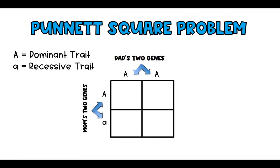In this example, mom is heterozygous — she has a dominant capital A and a lowercase recessive a, so that is her genotype with two genes. Dad is homozygous dominant — he has two capital A's, meaning two dominant genes. Now the question is: how do we figure out the four possible combinations?